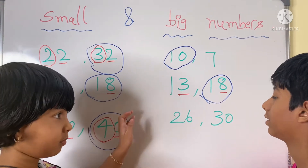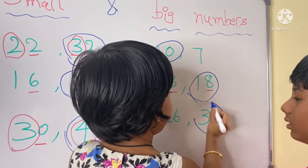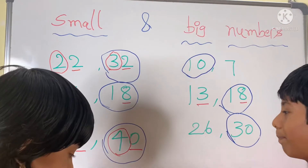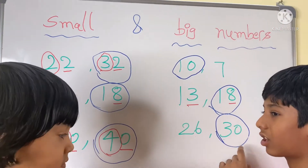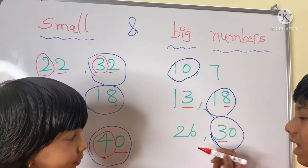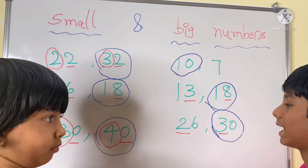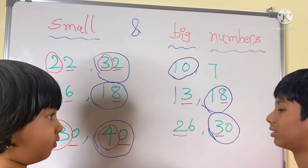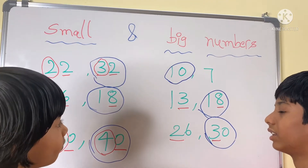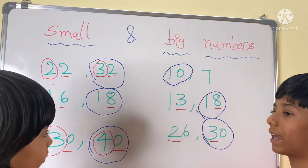26 and 30 — which is the big number? Thirty. Why? Compare the tens column — 3 and 2. So 2 is lesser than 3, and 3 is greater than 2. So 30 is big.